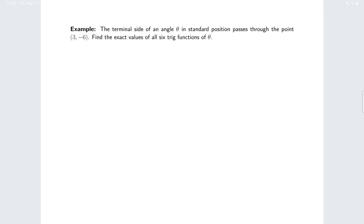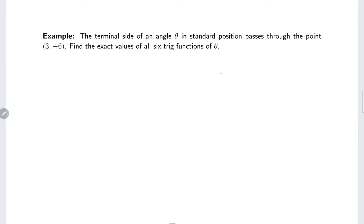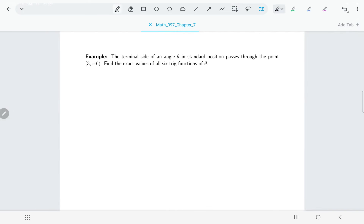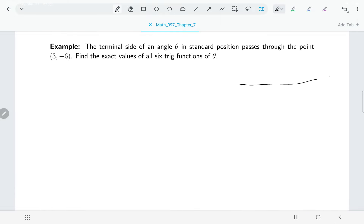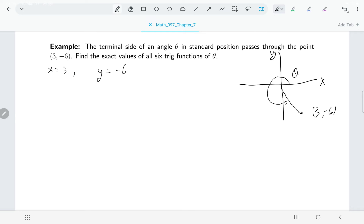Let's work through the first problem. We have an angle drawn in standard position passing through the point (3, −6). A quick sketch shows this angle is in quadrant 4. We want exact values for all six trig functions. We already know x = 3 and y = −6, so we just need to find r. Using r = √(x² + y²) gives √(9 + 36) = √45 = 3√5.